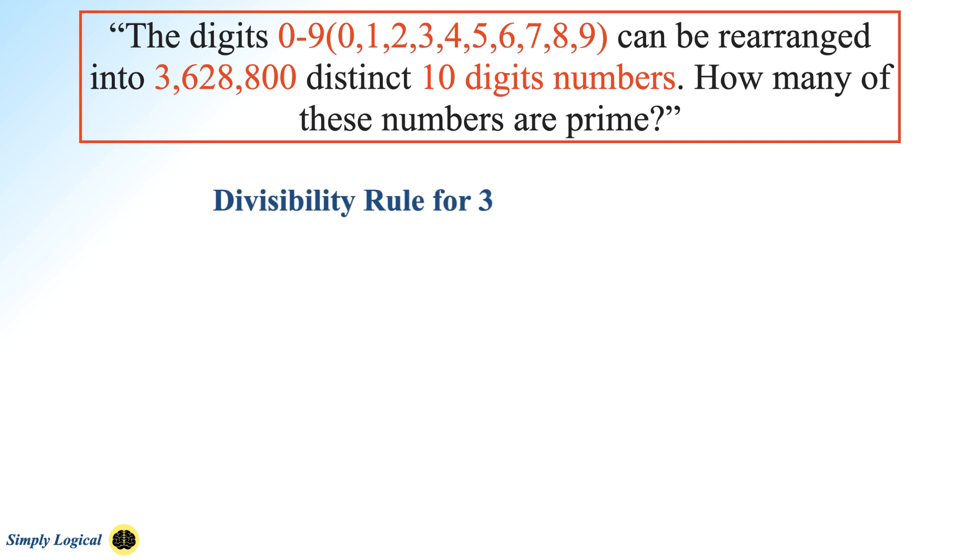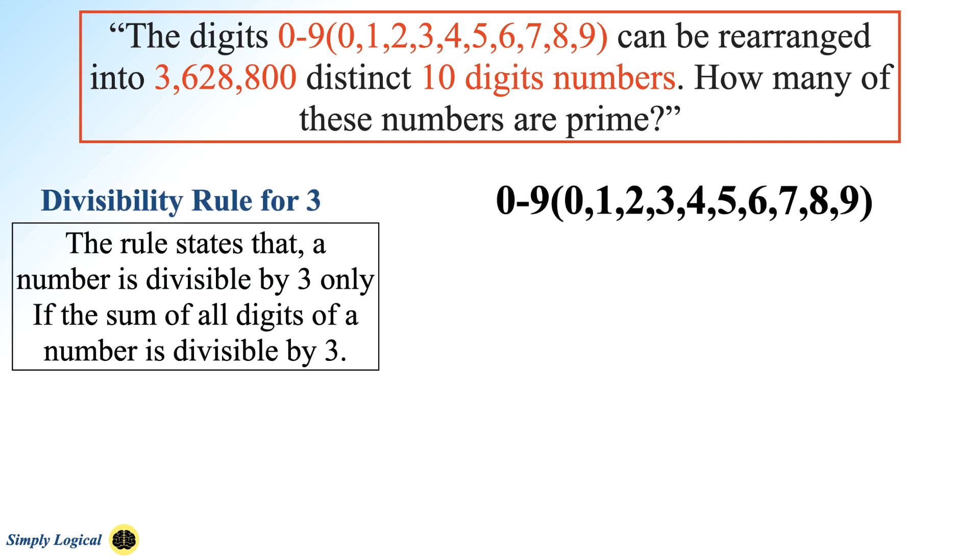We can utilize this rule to solve this problem. I will explain why this rule is important. So what we can do now is add all the numbers from 0 to 9. It is because regardless of arrangement of numbers in any combinations, the sum remains constant. The sum of all numbers from 0 to 9 is 45, and the sum of the digits in number 45 results in 9, that is 4 plus 5 equals 9.